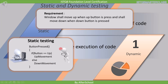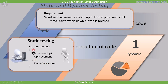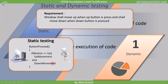Our task as a tester is to check whether this piece of code is satisfying the requirement or not, and this type of testing is known as static testing. Here it's saying that if the up button is pressed then move up, but if the up button is not pressed then move down. If you execute this code, the window will never stop moving — it will move up if you press the up button, but the moment you release the button it will keep on moving down. This means that this code is failing to fulfill the requirement. So this is how we find defects through static testing.